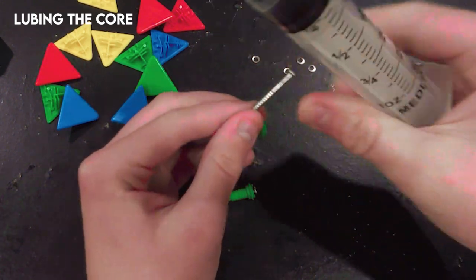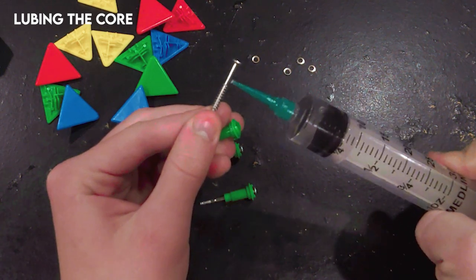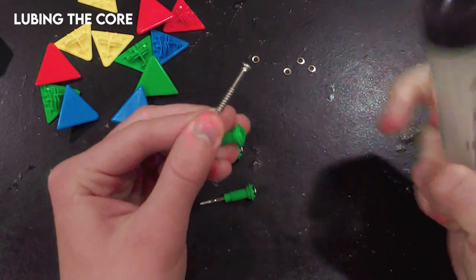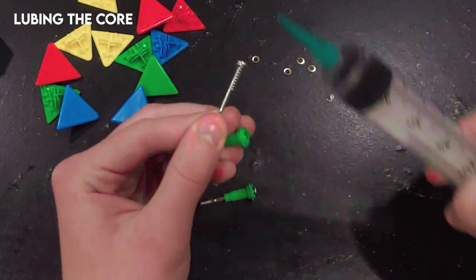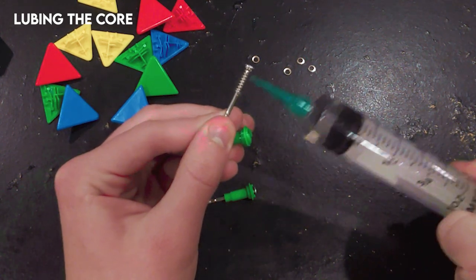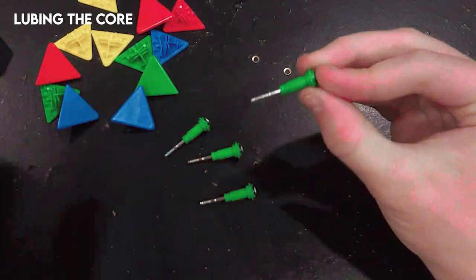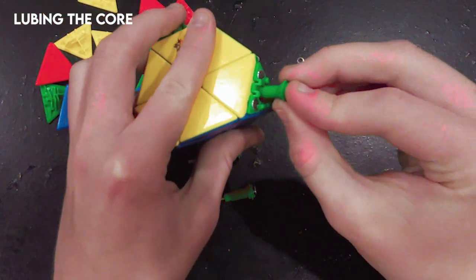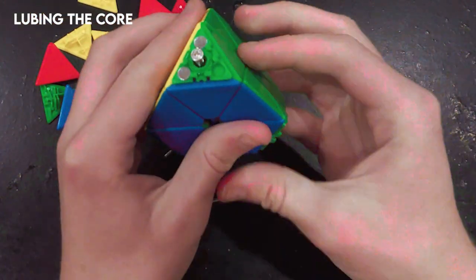Now I'm going to remove the screw and spring again, and put some lube both at the base of the screw head and under the spring. After that, they can go back in the puzzle, and I'm going to repeat that for the other sides.